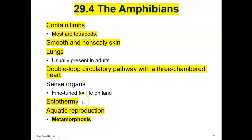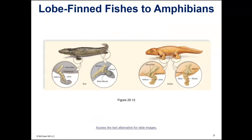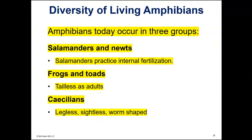Amphibians are ectothermic, like fish. They have aquatic reproduction — they reproduce in the water, and it is external. They undergo metamorphosis. Salamanders and newts practice internal fertilization rather than external, meaning they release the sperm inside the female's body. But frogs, toads, and caecilians all have external fertilization, where the male fertilizes the eggs outside the female's body, with external development.